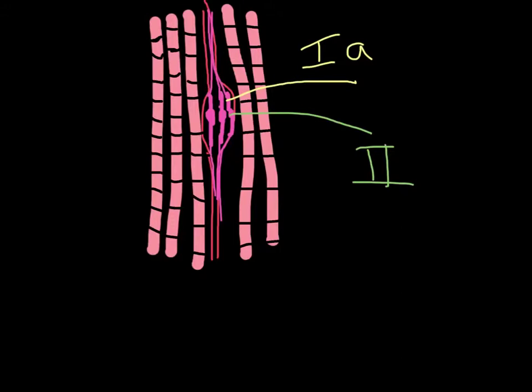But there are also some efferent neurons that go directly to these specialized muscle spindle muscle cells. So the ends of these muscle spindle muscle fibers, or intrafusal muscle fibers as they're called, have these gamma motor neurons. The gamma motor neurons, as we will see, regulate the length of these intrafusal muscle fibers.